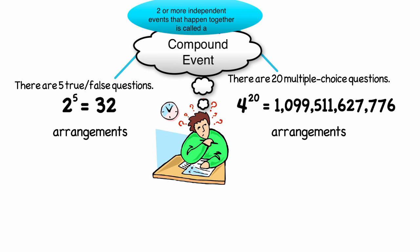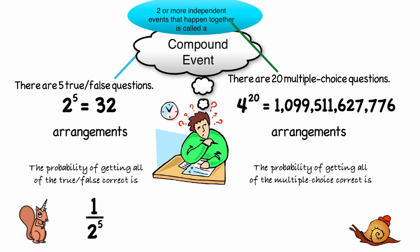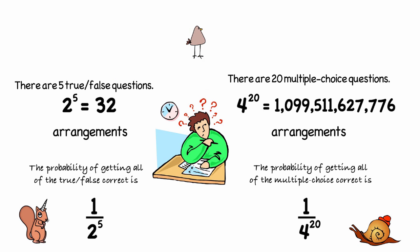To find the probability of a compound event, we find the probability of each of the events separately, and then we multiply. Well, the chance of getting all the true-false questions correct is 1 over 2 to the 5th. And the chance of getting all the multiple-choice questions correct is 1 over 4 to the 20th.